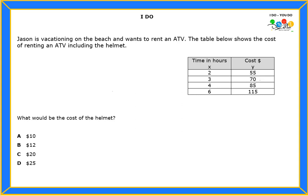And Y is the cost. So what do you notice about the numbers here? Well, it says that in two hours Jason already paid $55, in three hours he would have paid $70, in four hours $85, and in six hours $115.